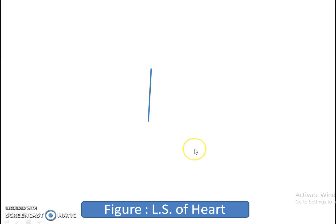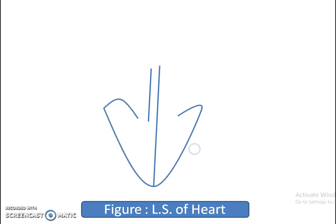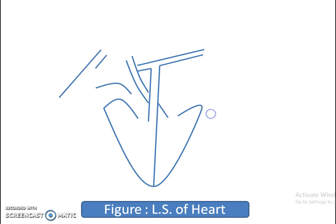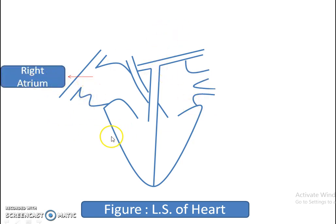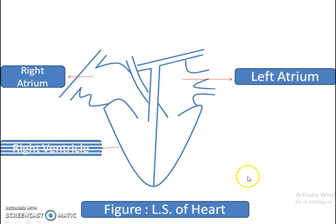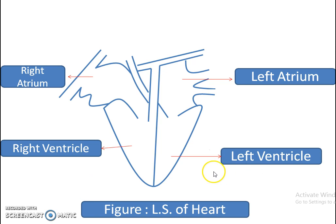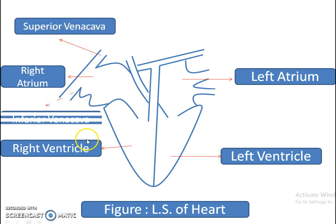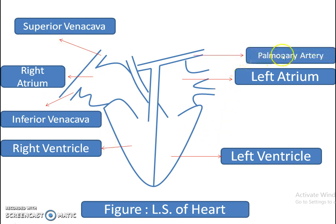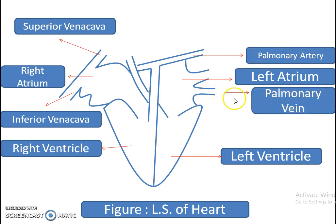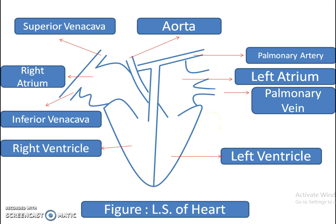We also draw this diametrically. This is the right atrium, left atrium, right ventricle, left ventricle, superior vena cava, inferior vena cava, pulmonary artery, pulmonary vein, and aorta. I think it's very easy for you to follow and draw this human heart.